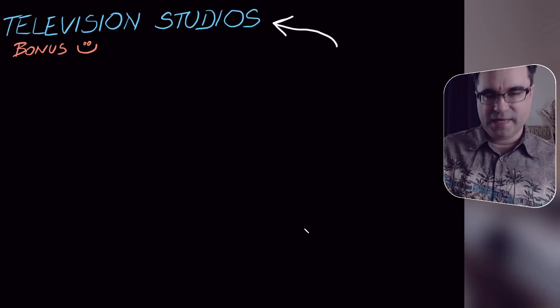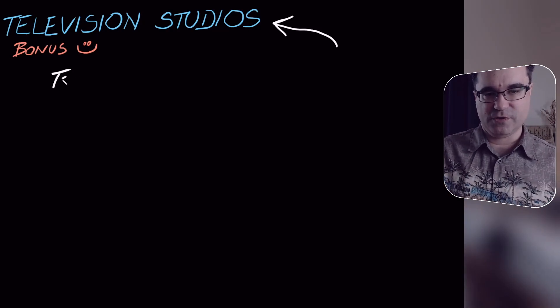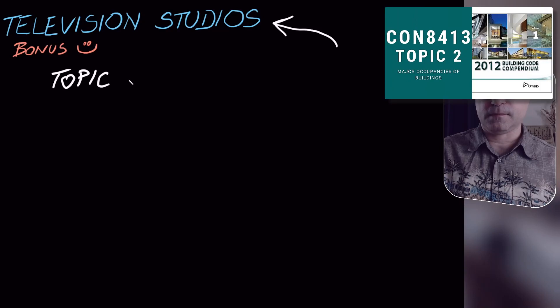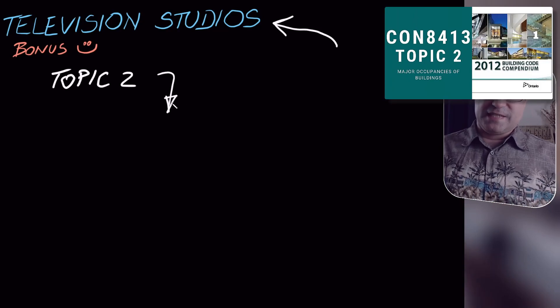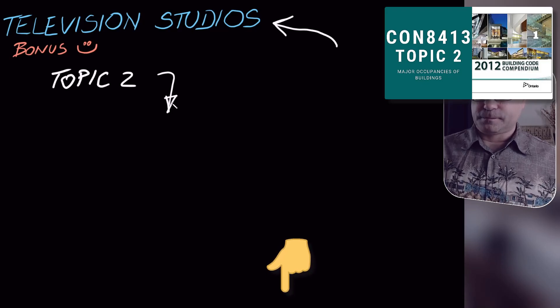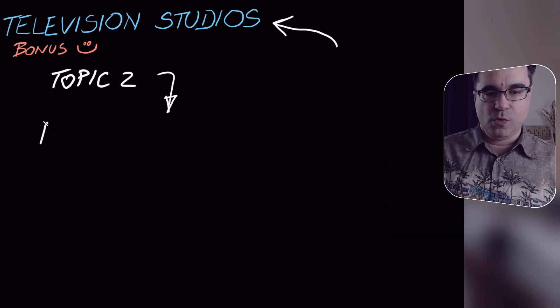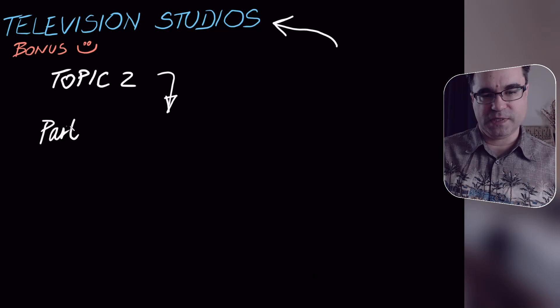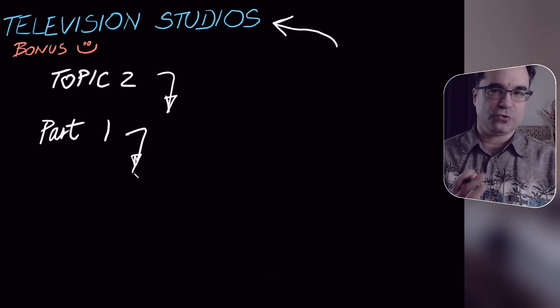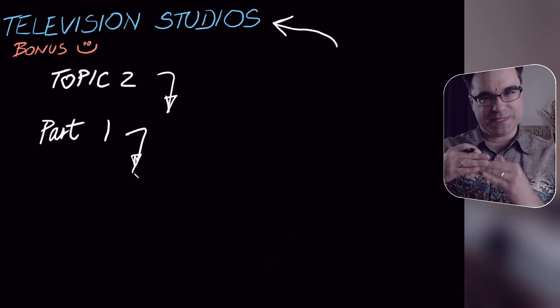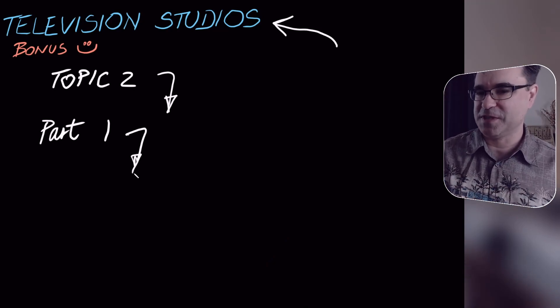Again, this relates to the concepts covered in topic two. So if you've not reviewed that topic, make sure you review it. It's linked for you in the description below. Also, part one of this example will also be linked for you in the description below. So if you haven't reviewed part one yet of these examples, go check it out. It's important because it shows you why we have to do certain things.